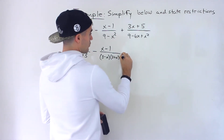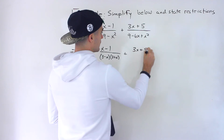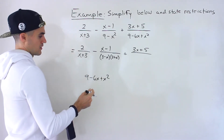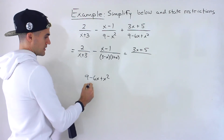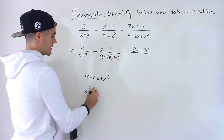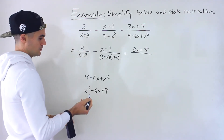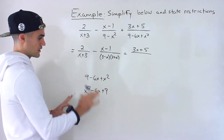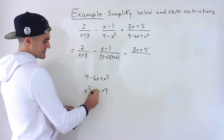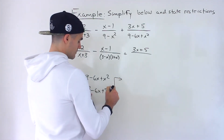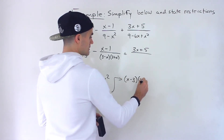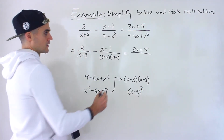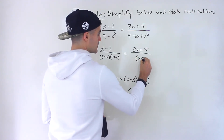The 3x plus 5 we can't factor. What about the 9 minus 6x plus x squared? Notice this is a quadratic, so I'm going to rearrange it into x squared minus 6x plus 9. This and the original are the exact same thing, just rearranged. Now x squared minus 6x plus 9 factors into x minus 3 times x minus 3, which is x minus 3 squared. So this denominator would be x minus 3 squared. We've factored everything, which is going to help us when combining into one fraction.